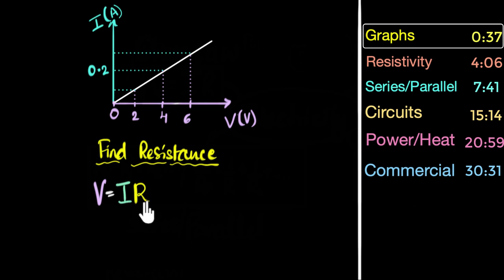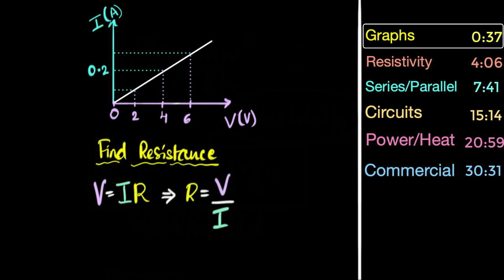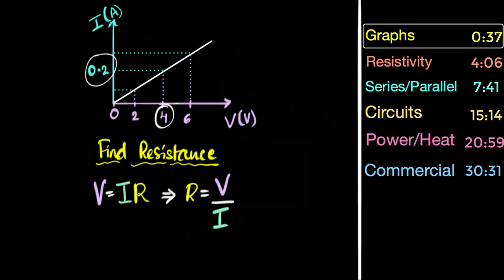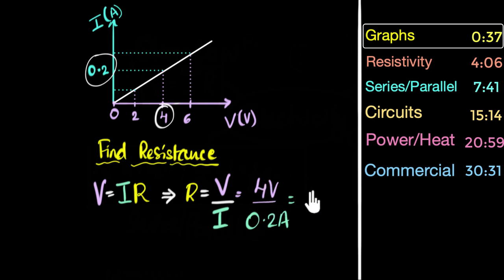Ohm's law says voltage V equals IR. This basically means that if the voltage across the conductor doubles, the current doubles; if the voltage halves, the current becomes half. The resistance R is a constant which does not depend on the voltage or the current. From this equation, resistance becomes V divided by I. Looking at the graph, only for four volts do we know the value of current, so we take that set: when V is four volts, the current is 0.2 amps. That gives us four divided by 0.2, which is 20 ohms. So this material has a resistance of 20 ohms.